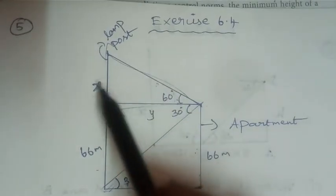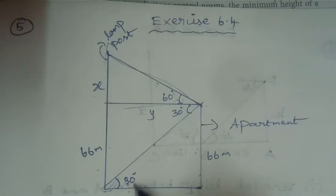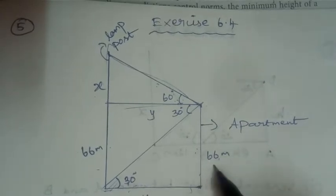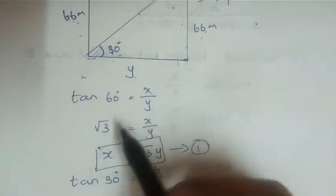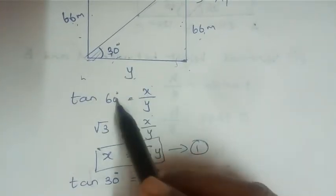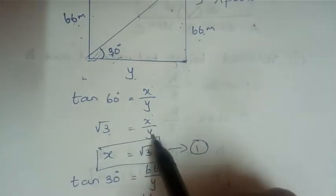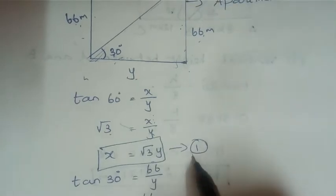For tan 60°, opposite over adjacent gives x by y. So tan 60° = x/y, and since tan 60° = √3, we get √3 = x/y. Cross-multiplying gives x = √3·y — this is Equation 1.